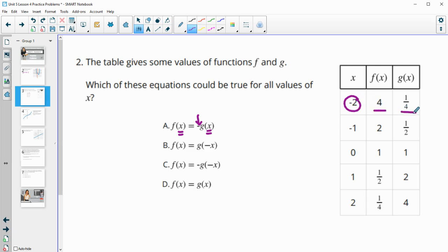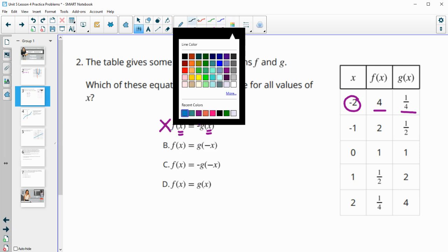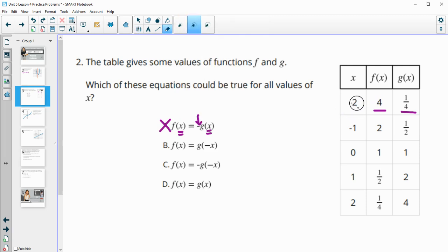f of x and g of x should be opposites of each other. Okay and they are not. Four and one-fourth are not opposites of each other. So this is false. Part b says that f of x equals g of negative x. So this one is talking about when we put opposite values into the function they equal each other. Their outputs equal. So opposite inputs equal the same output.